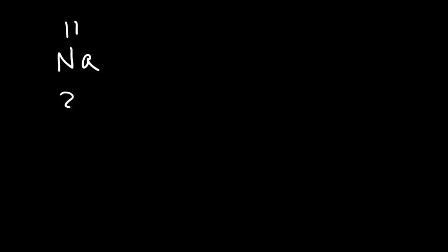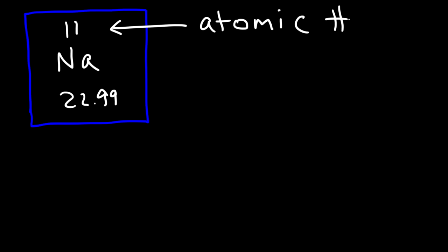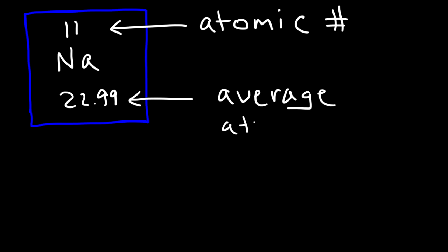So let's use sodium as an example. On a periodic table, you might see something that looks like this. The smaller of the two numbers is the atomic number, which is also equal to the number of protons. The larger of the two numbers is known as the average atomic mass.